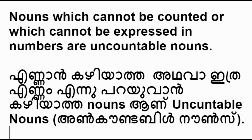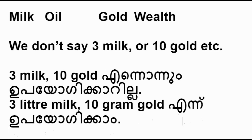Nouns which cannot be counted or which cannot be expressed in numbers are uncountable nouns. Milk, oil, gold, wealth, etc. are uncountable nouns. We don't say three milk or ten gold. We can say three litres of milk or ten grams of gold.